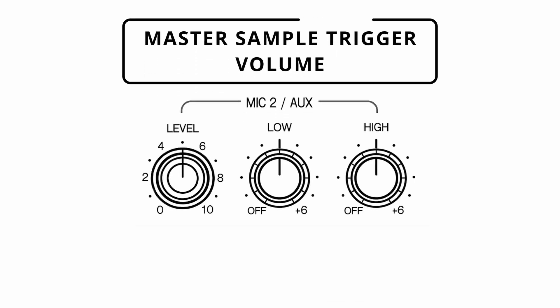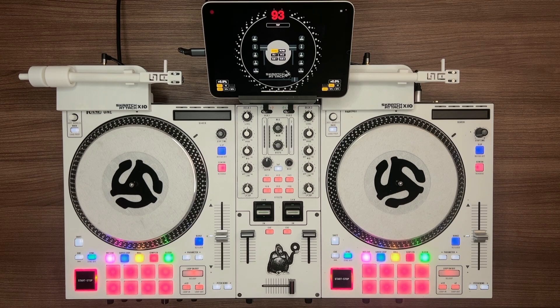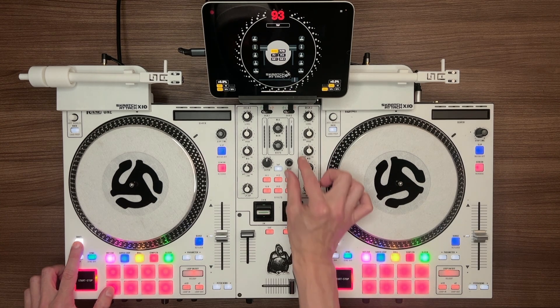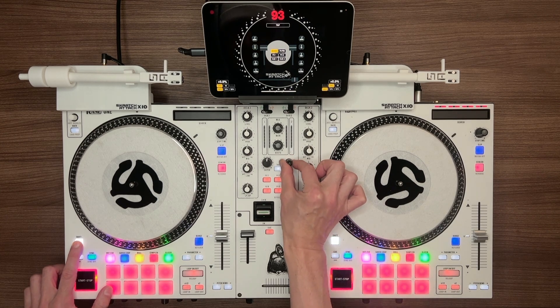Master sample trigger volume for both sides is controlled by the Mic 2 high knob, also defaulted to 12 o'clock. To adjust the volume for an individual sample, use the same method as adjusting individual loops — press Shift plus rotate the Beat knob.